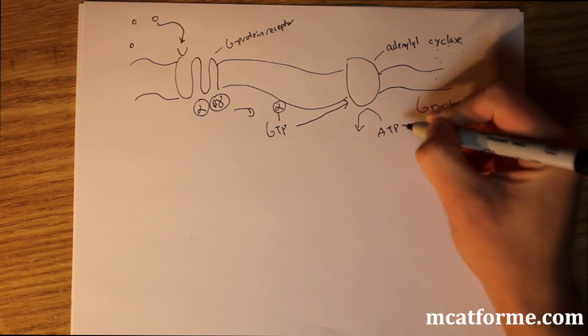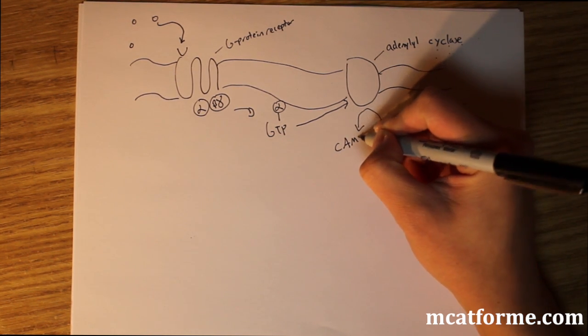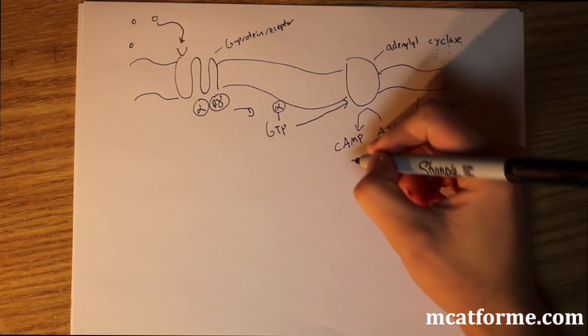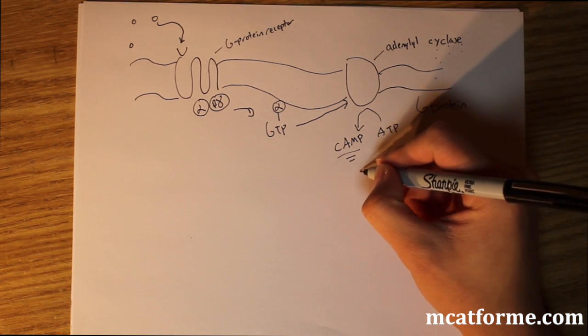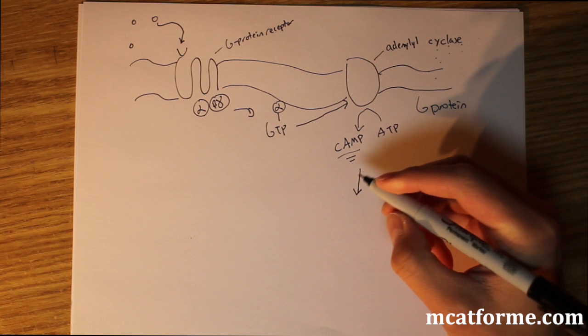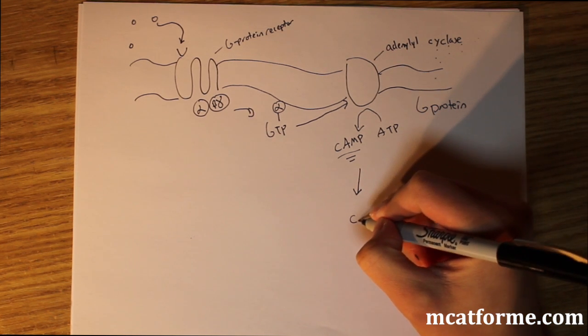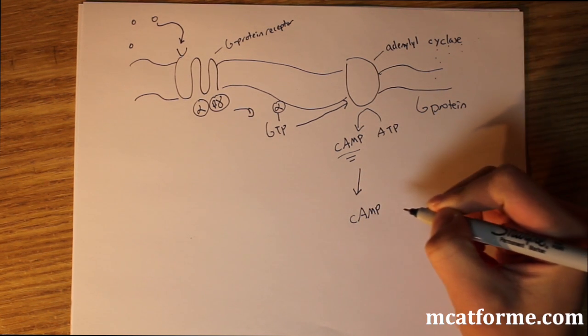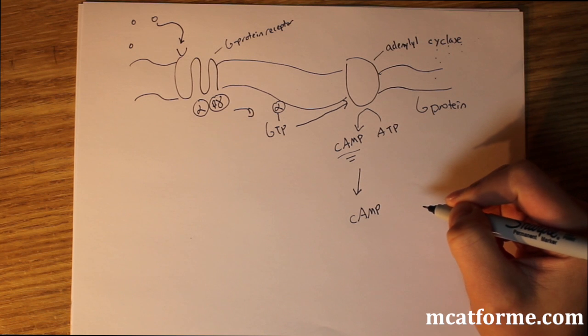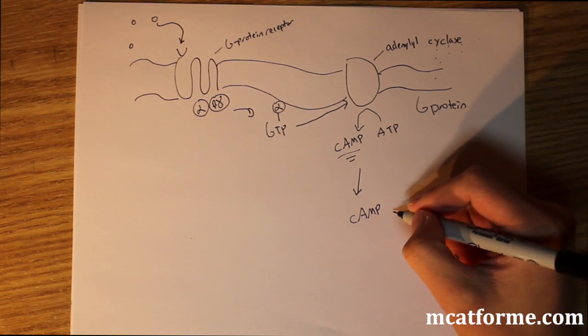What's going to happen after that is ATP is going to be hydrolyzed to cyclic AMP. Remember this is very important, cyclic AMP. We have to remember that. This is going to go on to activate cyclic AMP dependent protein kinase.